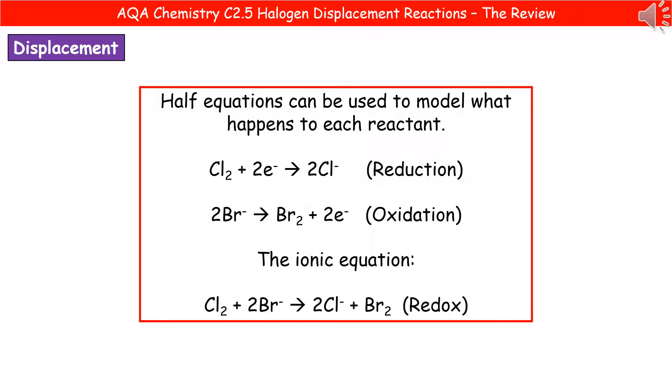So one thing we can actually use then to model what happens to each reactant is something called a half equation. So this is where we're just going to be looking at one reactant at any given time. So in the example we just looked at of chlorine reacting with sodium bromide, we'd have a look at what happens to the chlorine and what happens to the bromine in two separate half equations. So I've modeled them there for you. Chlorine starts off as Cl2 and we're going to add two electrons to it in order to make the chloride ions, so 2Cl-. Now because it's gaining electrons, it's a reduction reaction. Think back to oil rig. Oxidation is loss of electrons. Reduction is the gain of electrons.